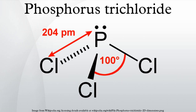A large number of similar substitution reactions are known, the most important of which is the formation of phosphite esters by reaction with alcohols or phenols. For example, with phenol, triphenyl phosphite is formed: 3PhOH + PCl3 → P(OPh)3 + 3HCl, where Ph stands for phenol group C6H5.